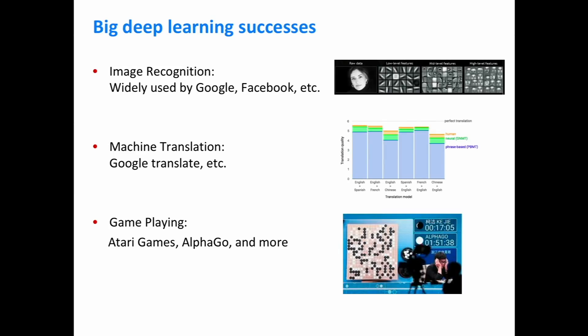Here are three of arguably the most famous successes of deep learning. First, image recognition: before, people used highly engineered features to classify images; now neural nets are much superior. Second, machine translation has really closed the gap between phrase-based systems and human-quality translation — widely used in things like Google Translate, with quality that has gotten a lot better over the past five years. Third, game playing: there's been work on Atari games, AlphaGo, and more recently AlphaStar and OpenAI Five.